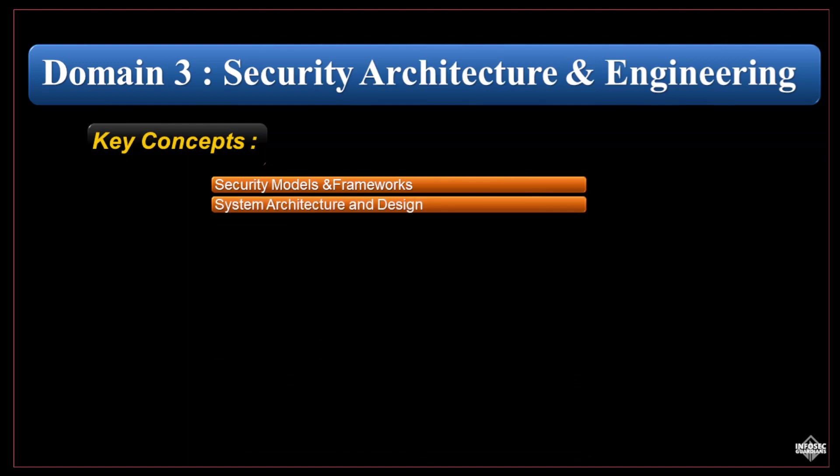System architecture and design: learn how to design and implement secure system architectures, involving selecting the appropriate hardware, software, and network components while considering security requirements. Security evaluation models: explore tools like Common Criteria and Evaluation Assurance Levels (EALs) to assess the security capabilities of systems and products.